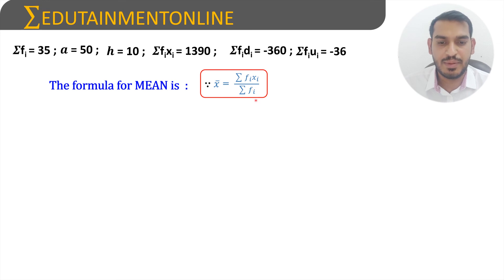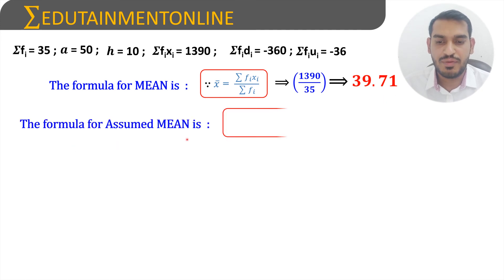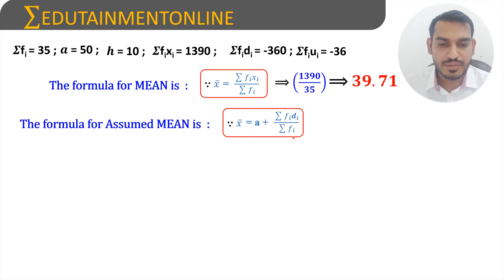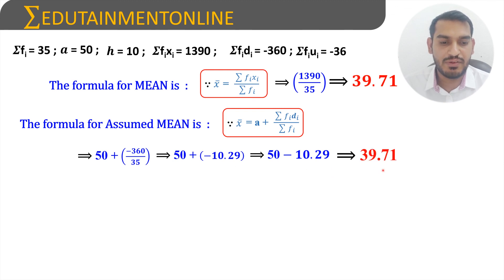Applying the Direct Method: mean = Σ(fi·xi) / Σfi = 1390 / 35 = 39.71. For the Assumed Mean Method: mean = a + Σ(fi·di) / Σfi = 50 + (−360 / 35) = 50 + (−10.29) = 50 − 10.29 = 39.71.